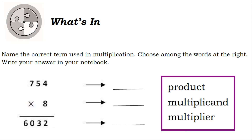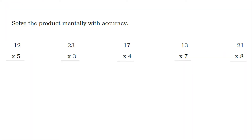What's in a name? Choose the correct term used in multiplication from the words at the right and write your answer in your notebook. Answers: 754 is the multiplicand and 8 is the multiplier; 6,032 is the product. Solve the product mentally with accuracy.